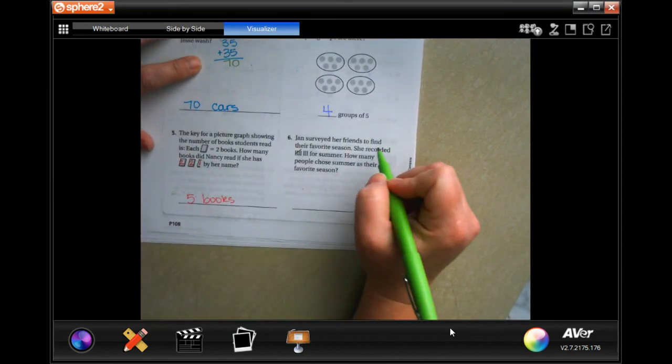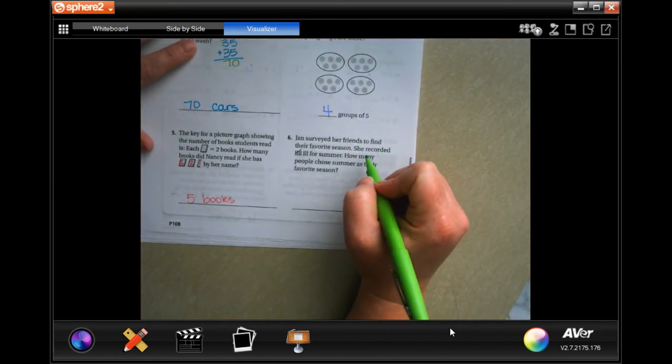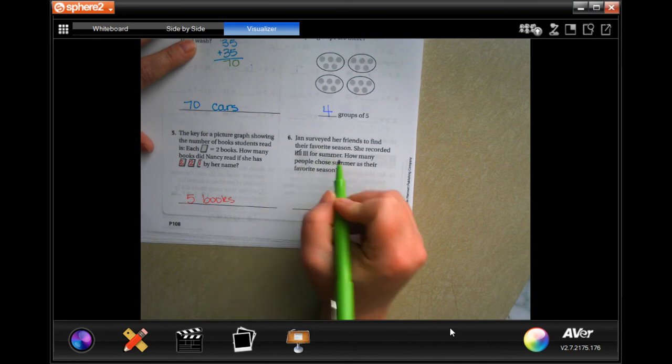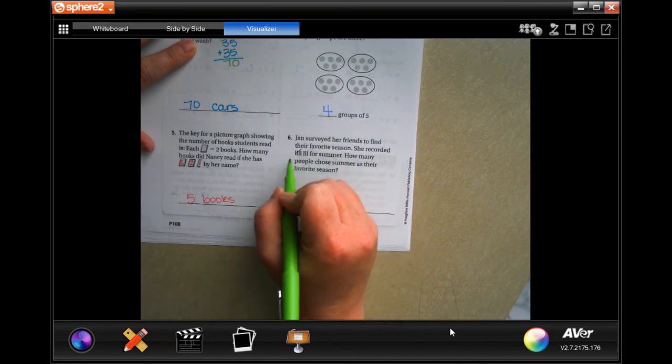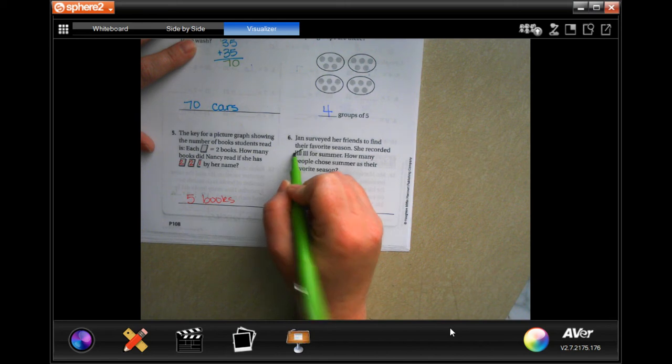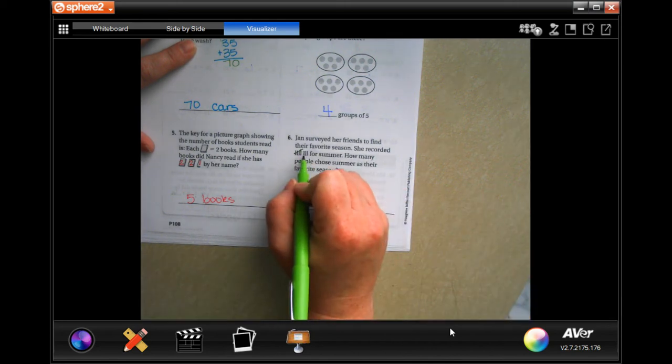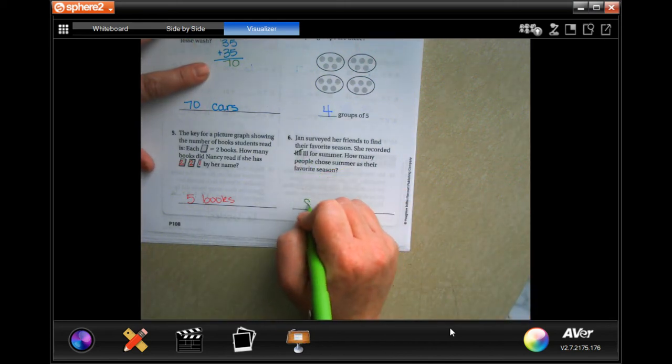Jan surveyed her friends to find their favorite season. She recorded five plus three for summer. How many people chose summer as their favorite season? Well, anytime that you have a line going across that's five, and then one, two, three. So that is eight people.